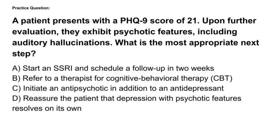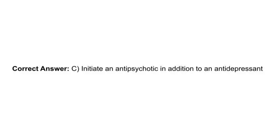Next question: A patient presents with a PHQ-9 score of 21. Upon further evaluation, they exhibit psychotic features including auditory hallucinations. What is the most appropriate next step? A. Start an SSRI and schedule a follow-up in two weeks. B. Refer to a therapist for CBT. C. Initiate an antipsychotic in addition to an antidepressant. D. Reassure the patient that depression with psychotic features resolves on its own. Correct answer: C. Severe depression with psychotic features requires a combination of an antidepressant and antipsychotic — monotherapy with an SSRI alone is inadequate.